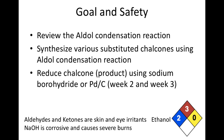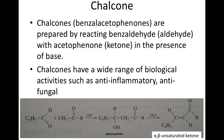In the next two experiments, we will reduce these products using two different reducing agents. A chalcone is an aromatic compound that contains an alpha-beta-unsaturated ketone functional group. Chalcone can be synthesized by aldol condensation reaction using benzaldehyde and acetophenone in the presence of a strong base catalyst.